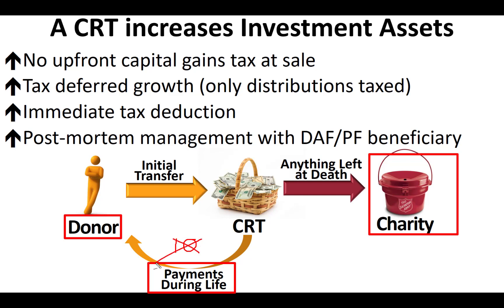But if instead of living 10 years, the person lives 20 years, they're going to get a lot more value out of that charitable remainder trust. And because the charity has to wait 20 years, the present value of what they get is going to be much smaller. In fact, with a charitable remainder annuity trust with fixed payments, there could be nothing left over after 20 payments instead of 10. So the bottom line is: if a person lives longer, they get more money, the charity waits longer, and typically will get less.